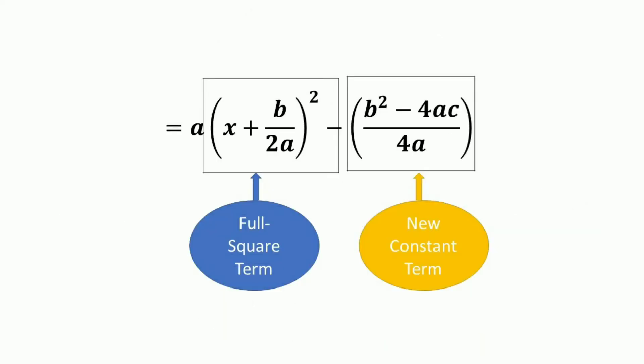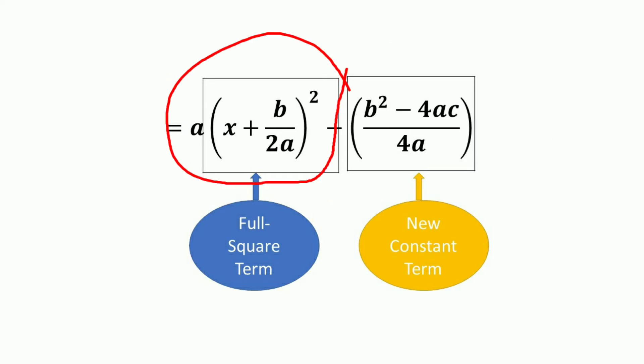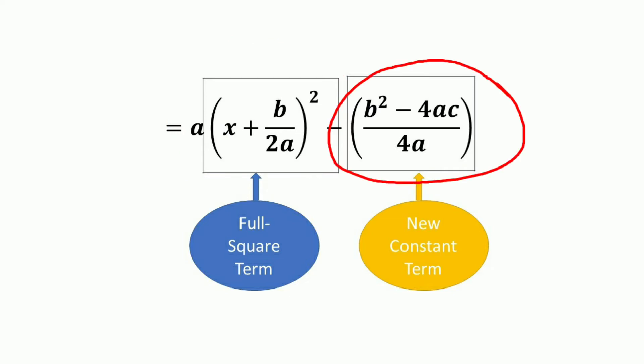Through the process of completing the squares, the quadratic function becomes: a·(x + b/2a)² − (b² − 4ac)/4a. The first term a·(x + b/2a)² is the full square term, and the second term (b² − 4ac)/4a is the new constant term.